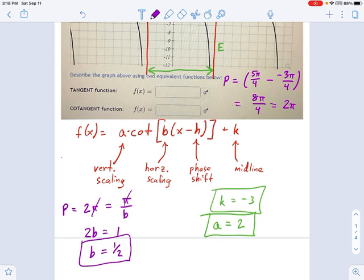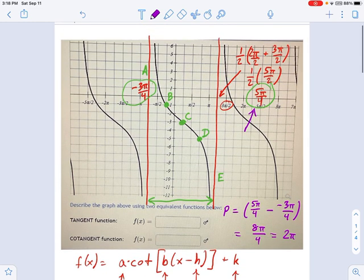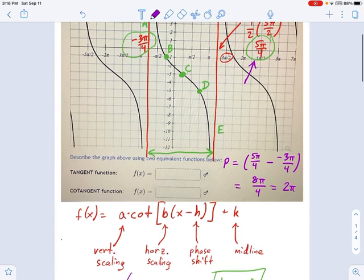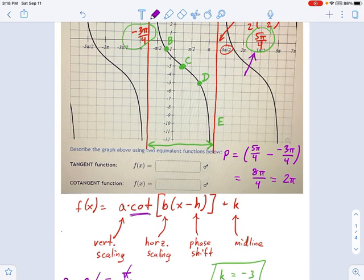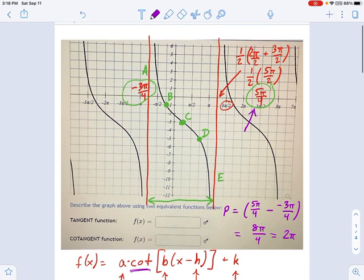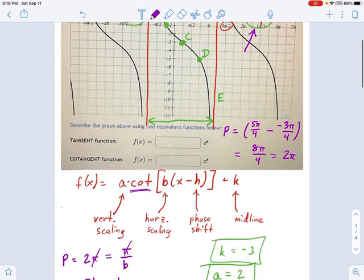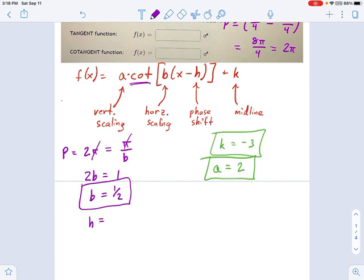What's missing? H. Great. H is easy. For a cotangent function, remember, that's what I'm dealing with here. I'm dealing with cotangent. You just describe the x location of the left asymptote, A. And that is -3π/4. So H = -3π/4.